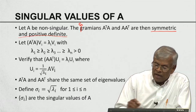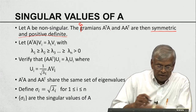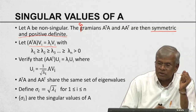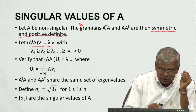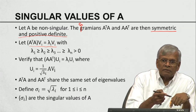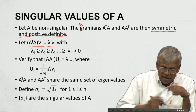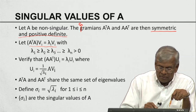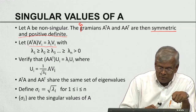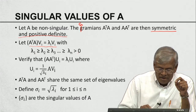Since AᵀA is symmetric, we can perform a symmetric eigenvalue analysis: AᵀA vᵢ = lambda_i vᵢ. Here lambda₁ ≥ lambda₂ ≥ ... ≥ lambda_n, and since AᵀA is positive definite, even the smallest eigenvalue is positive. We order the eigenvalues: the largest is lambda₁, the next is lambda₂, and so on, with lambda_n being the smallest but still positive.